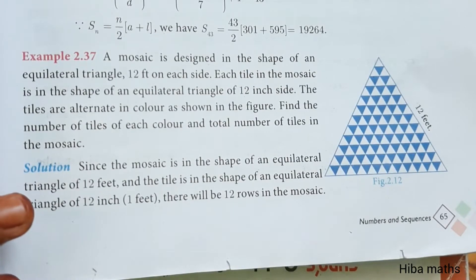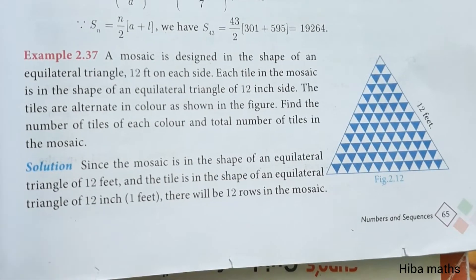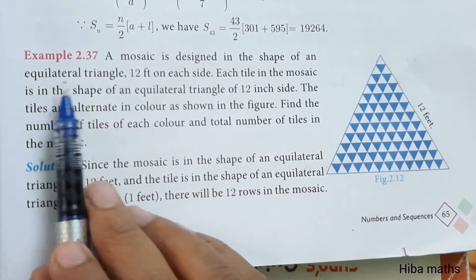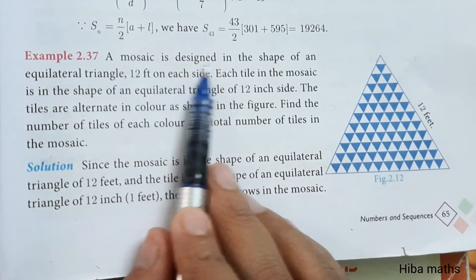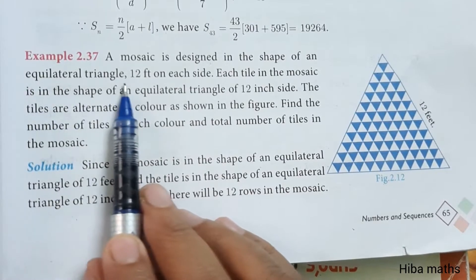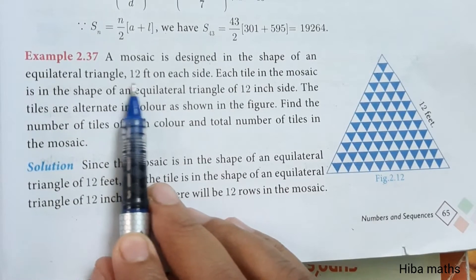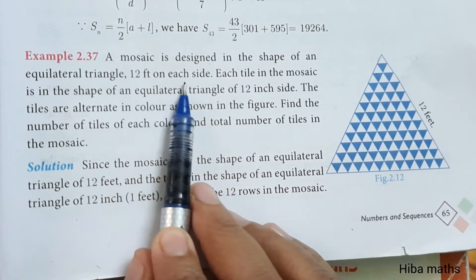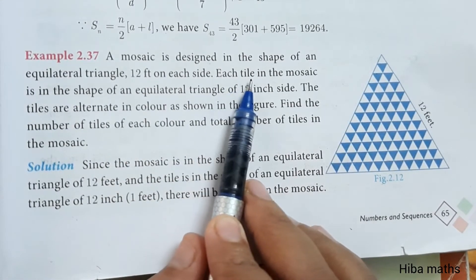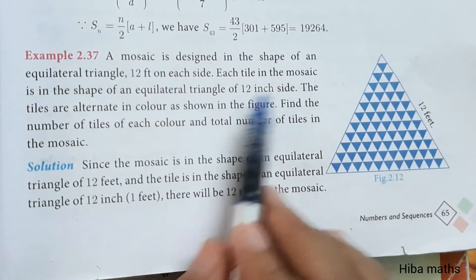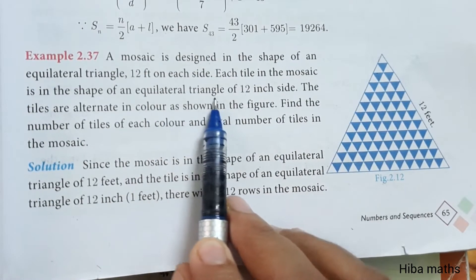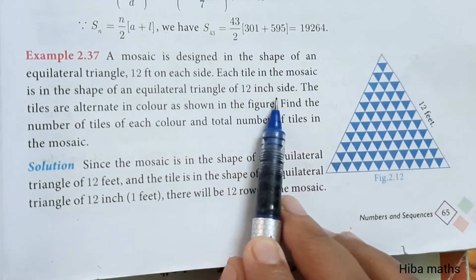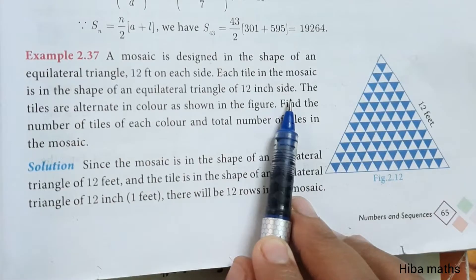Hello students, welcome to HIPAA MAX In Standard Max. Chapter 2, Example 2.37: A mosaic is designed in the shape of an equilateral triangle 12 feet on each side. Each tile in the mosaic is in the shape of an equilateral triangle of 12 inch side.